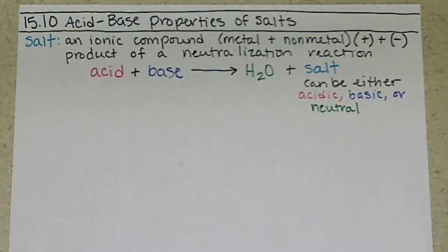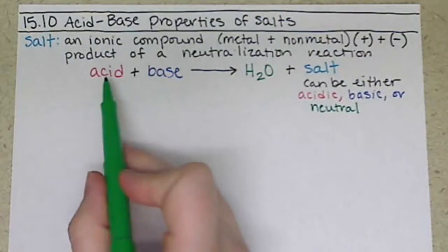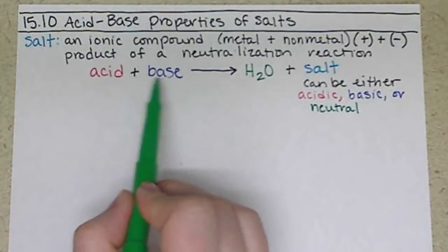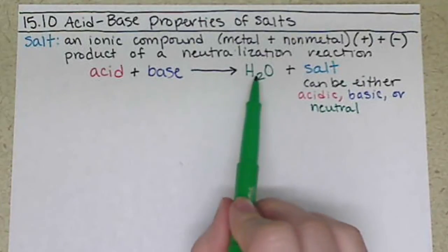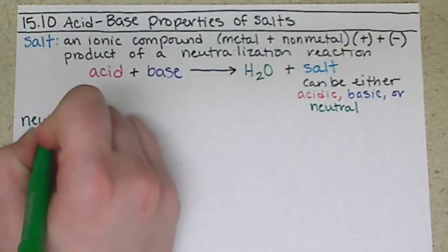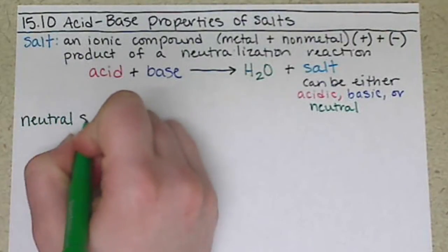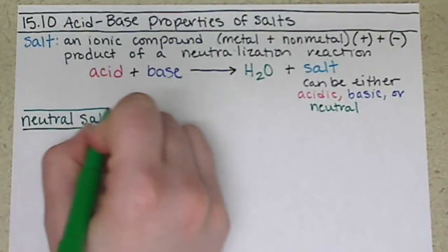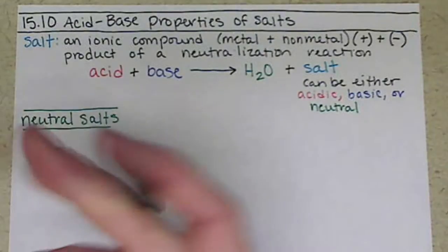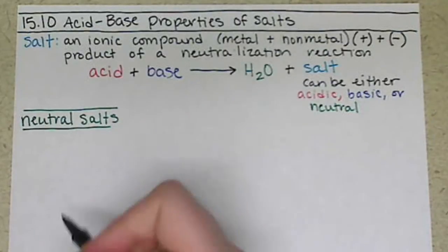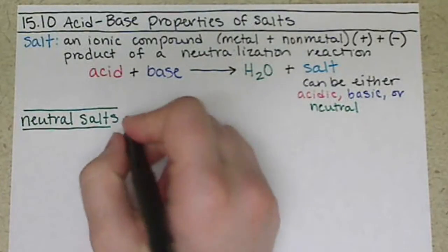So when we look at a neutralization reaction, we're going to take an acid plus a base, one of these can't be water, it has to be something else, because we're going to be forming water, and our salt. So if we look at neutral salts first, our neutral salts are going to come when we neutralize a strong acid with a strong base.